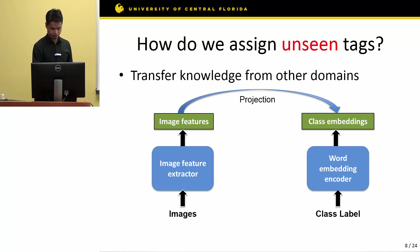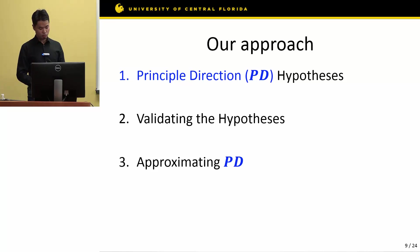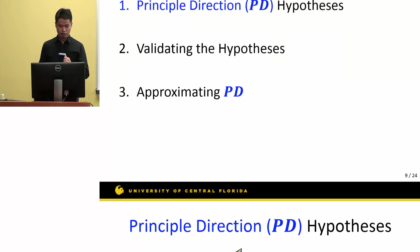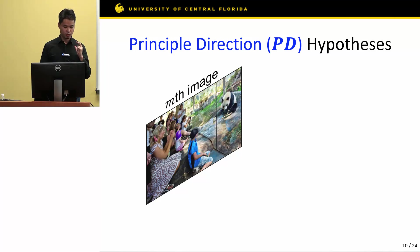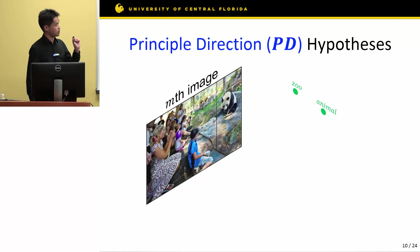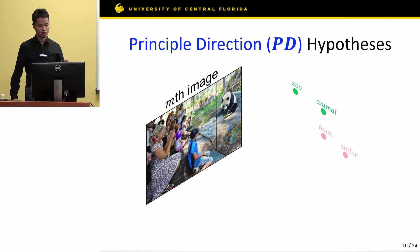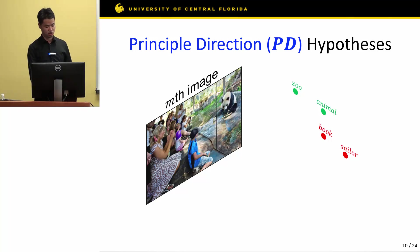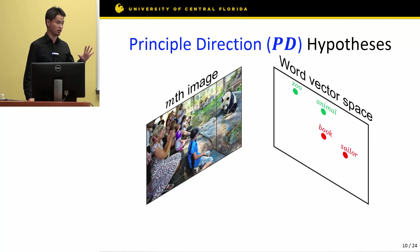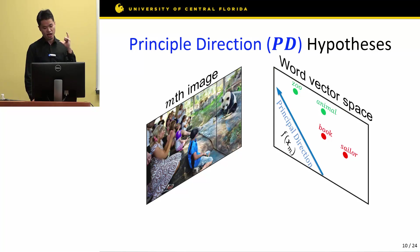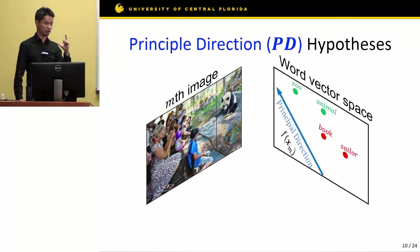Before we jump into our method, I'd like to introduce our hypothesis. We assume something called the principal direction. Suppose we have an image annotated with some positive tags relevant to its content, such as 'zoo' and 'animal,' and also associated with some irrelevant tags such as 'book' and 'sailor,' which are not descriptive for this image. Those tags are distributed in the word vector space — the embedding space I just introduced. We assume that for each particular image, there exists something called a principal direction — a ranking direction in this word vector space that would perfectly rank those tags.